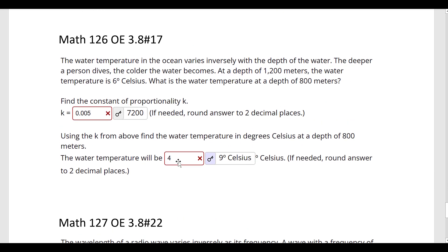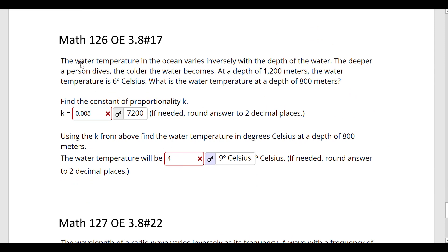Let's look at this number 17 here. The water temperature in the ocean varies inversely as the depth of the water. So I'll do k over d. The deeper a person dives, the colder the water becomes. At a depth of 1,200 meters, the water temperature is 6 degrees Celsius. So 6 equals k divided by d.